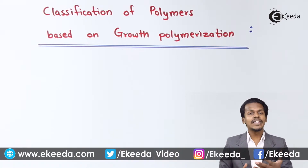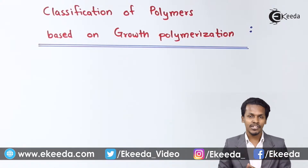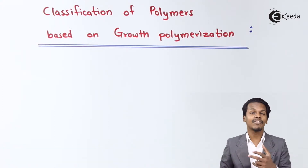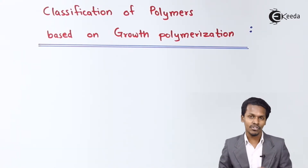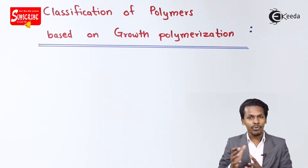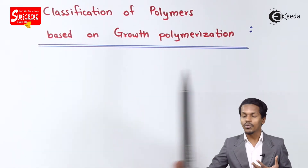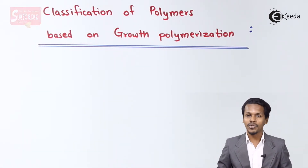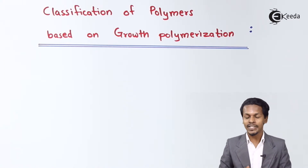As we discussed in the previous lecture on the classification of polymers based on the polymerization process, we learned about addition polymers as well as condensation polymers. Based on that, we are now going to talk about the classification of polymers based on the growth polymerization process. There are basically two kinds of growth polymerization.